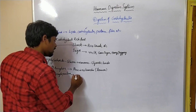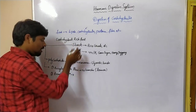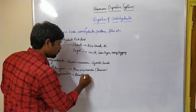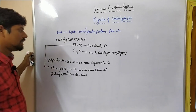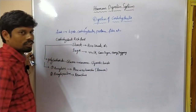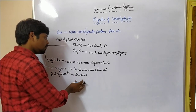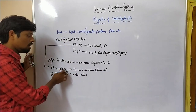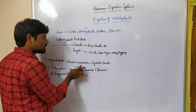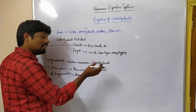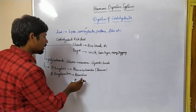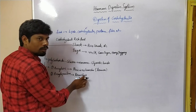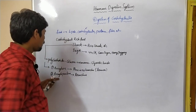Whereas amylopectin is a polysaccharide — nothing but starch — that contains branches, so there is no linear structure. Monomers of glucose combine together linearly to form amylose, and those linear structures further combine with another bonding to form branches, and that is called amylopectin.